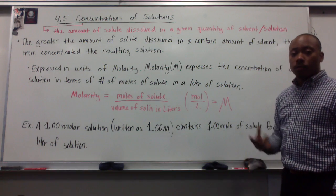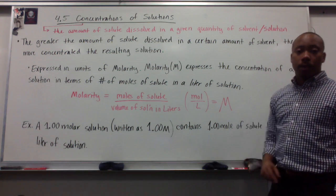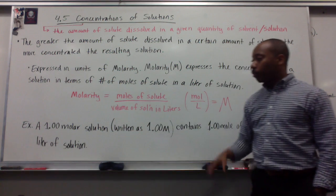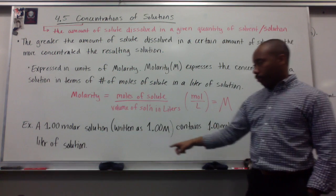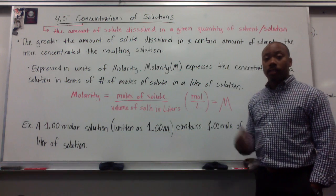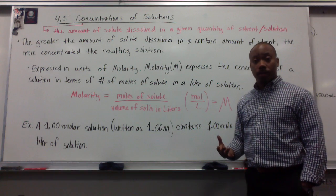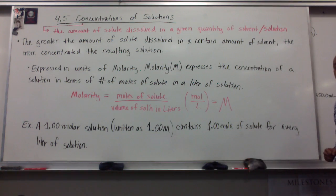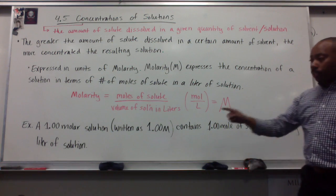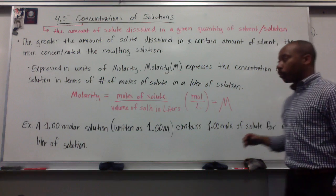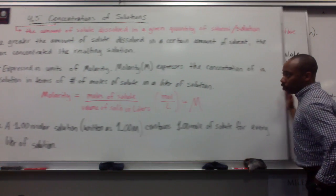When you see big M, it's referring to moles of your solute per liter of your solution. For example, a 1.00 molar solution, written as 1.00 big M, contains 1.00 moles of solute for every liter of solution. Now, we can calculate molarity, and let's talk about how to do so.